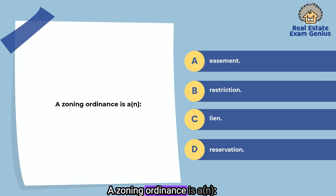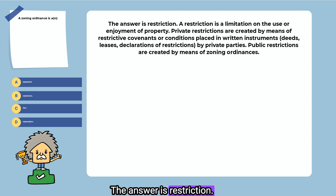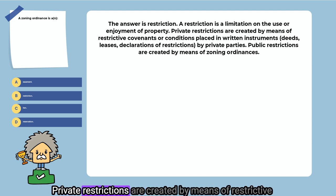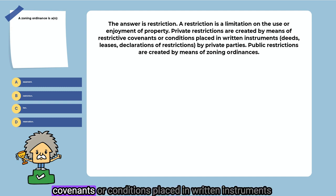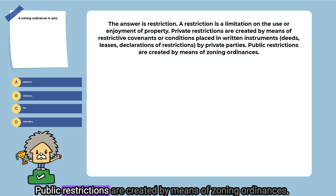A zoning ordinance is a: easement, restriction, lien, or reservation. The answer is restriction. A restriction is a limitation on the use or enjoyment of property. Private restrictions are created by means of restrictive covenants or conditions placed in written instruments by private parties. Public restrictions are created by means of zoning ordinances.